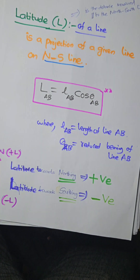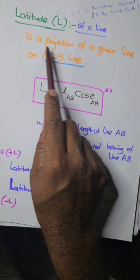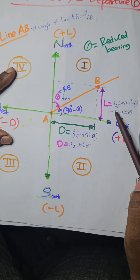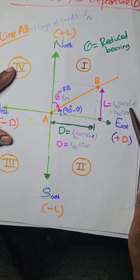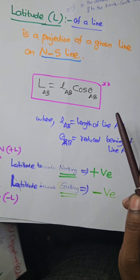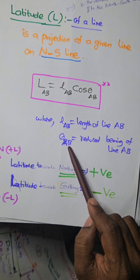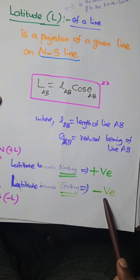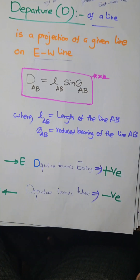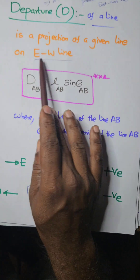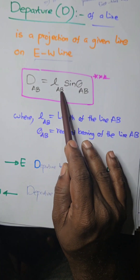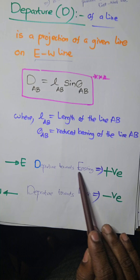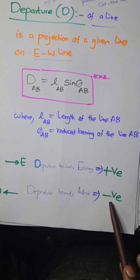Latitude is a projection of a line on the north-south line. Latitude is L cos θ, because it is L sin(90 − θ). Don't forget, theta is the reduced bearing. Latitude in the north direction — northing — is positive; latitude towards south is negative. Departure is a projection of the line on the east-west line. Departure is L sin θ, where L is the length of the line. Departure towards east is positive; departure towards west is negative.